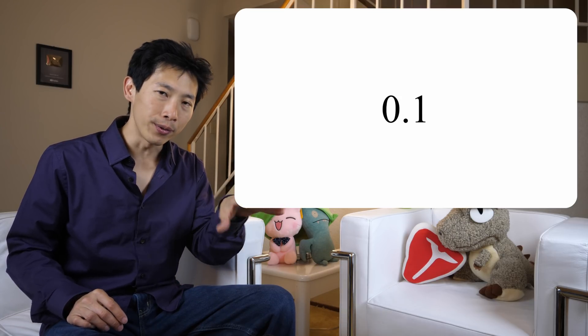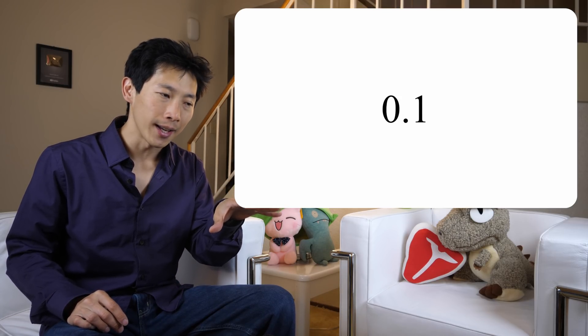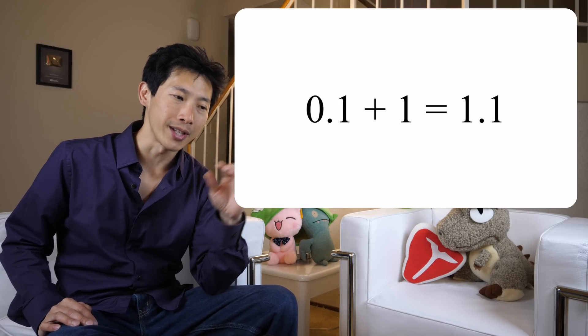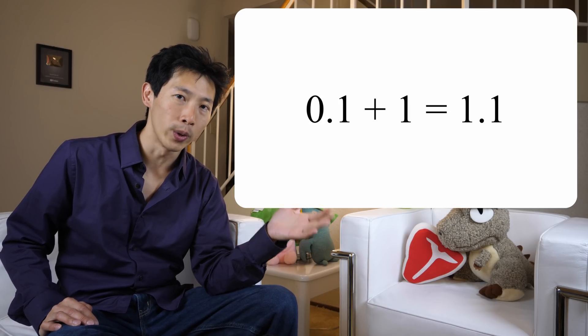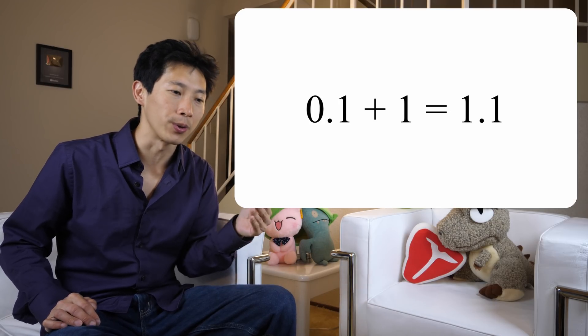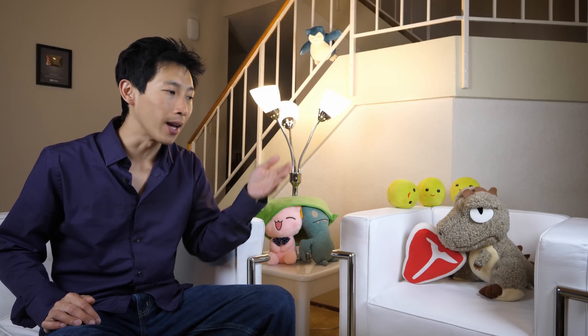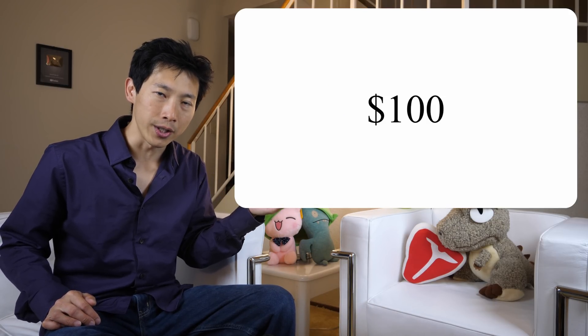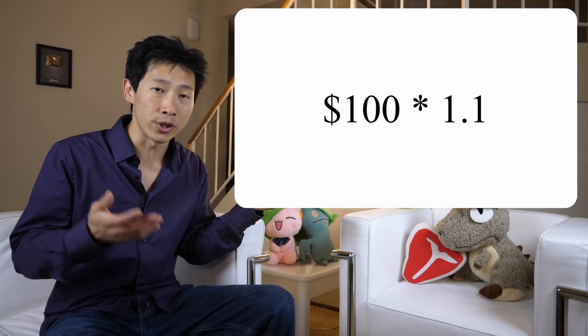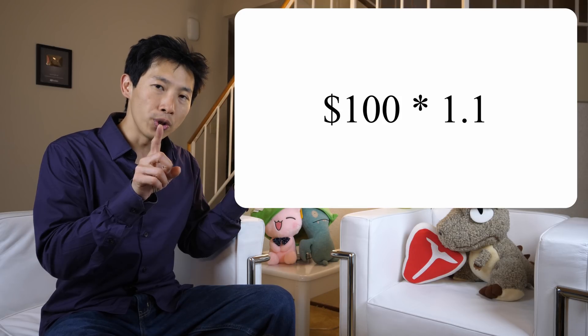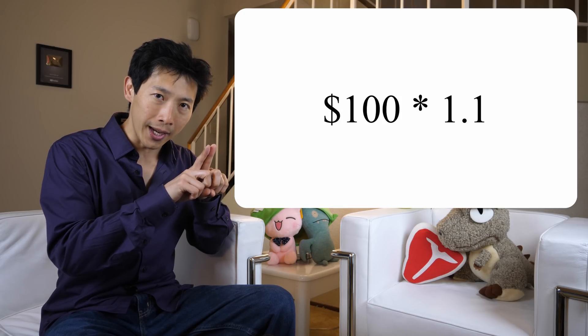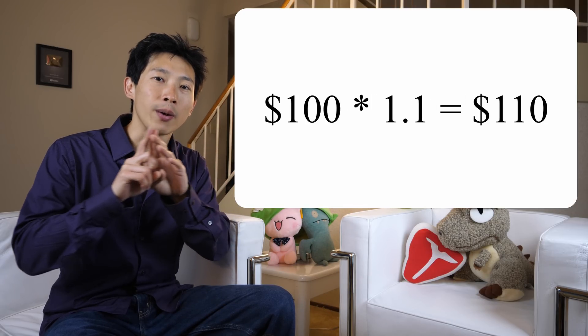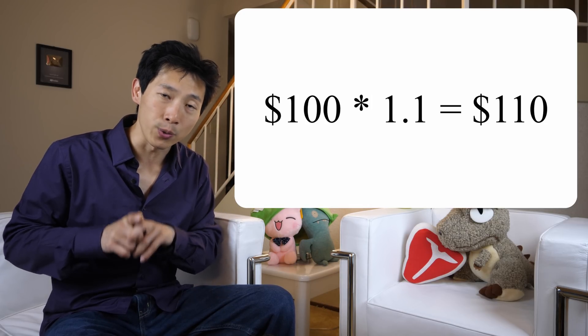A quick shortcut — and you can do this with tax as well — is to take whatever interest rate it is and add one. The plus one part takes into account the original principal. So you can do $100 times 1.1, which is 110%. You do one multiplication and you get $110, which is what you owe finally.